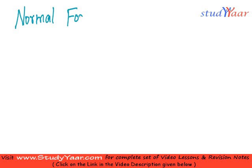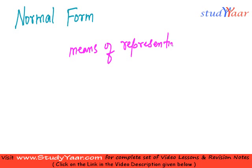Now let's talk about the concept of normal forms. A normal form is simply a method of representing a propositional expression. There are basically two types of normal forms: one is disjunctive normal form and the other is conjunctive normal form.